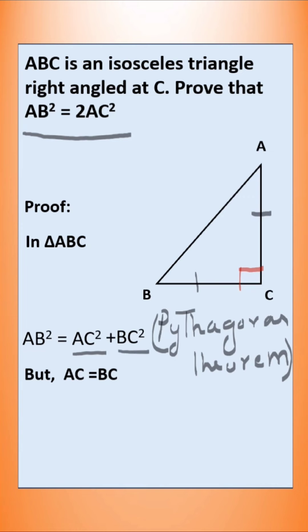Instead of BC, let us substitute AC. AB² = AC² + AC². Instead of BC², we write AC². This implies AB² = 2AC². This is what we needed to prove. Hence proved.